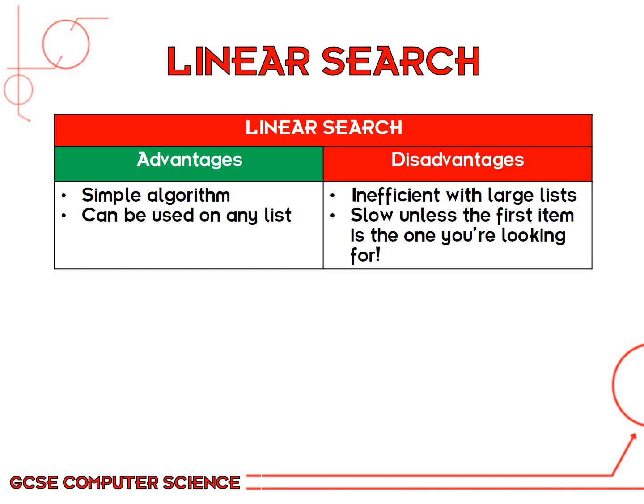It's obviously a pretty simple algorithm to create the linear search, because it's just a simple step that you're repeating over and over again. The advantages are that it's a simple algorithm and you can use it on any list — it doesn't matter if it's in order or not. The obvious disadvantage is it's very inefficient if you've got a large list; you could potentially end up checking 200, 300, or 10,000 times to find the right item. Obviously this will also mean that it's quite slow, unless you get lucky and the first item is the one you're looking for.